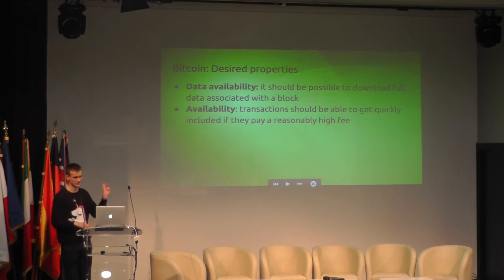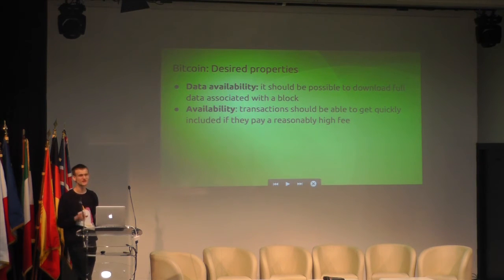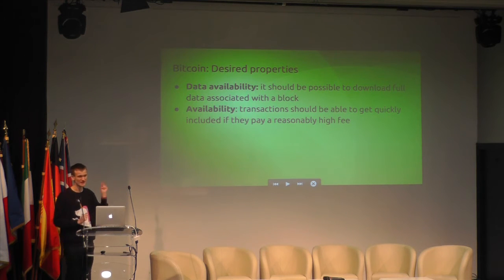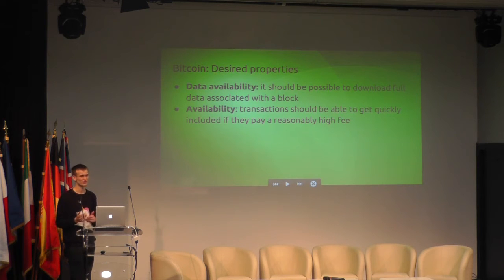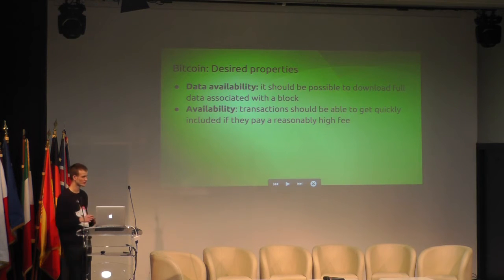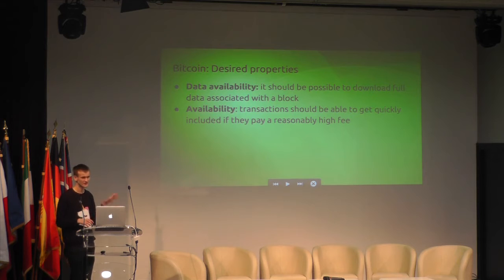Data availability is another fairly important property that we think about a bit less but is really important. It should be possible to download the full data associated with a block. You could imagine a mining cartel mining a chain of completely valid blocks but only publishing the headers and keeping all the rest of the data to itself. This would actually be a failure of the system because no one else would know what the state is. In the case of Bitcoin, this is solved through the full node protocol — as a full node, you only accept blocks that you can personally download and verify everything.